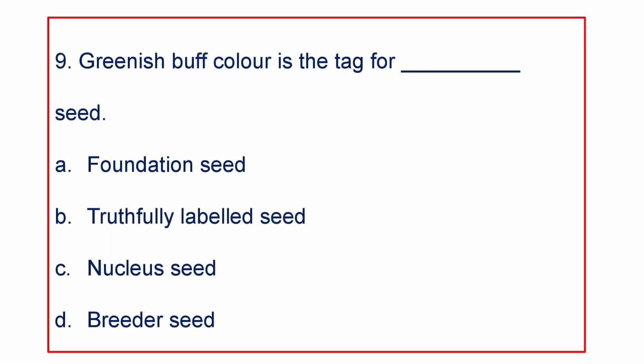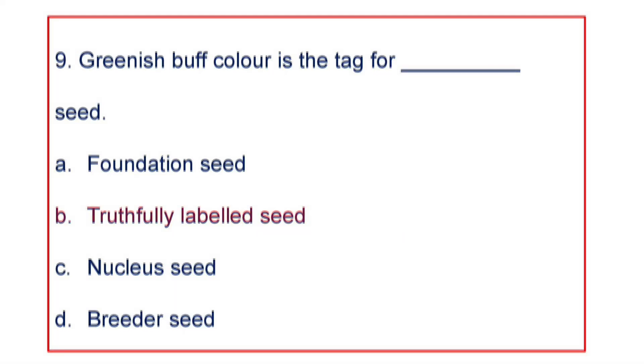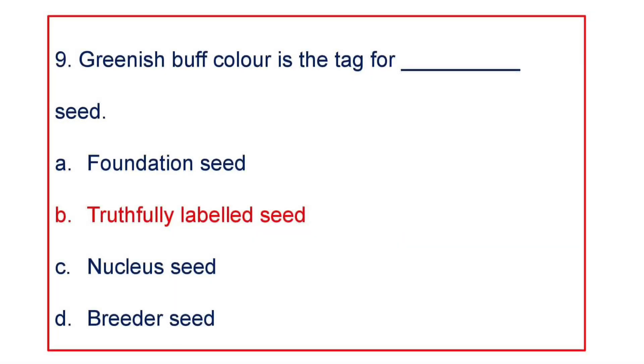Next question: Greenish buff color is the tag for which class of seed? A. Foundation seed, B. Truthfully labeled seed, C. Nucleus seed, or D. Breeder seed. The answer is Greenish buff color is for Truthfully labeled seed.